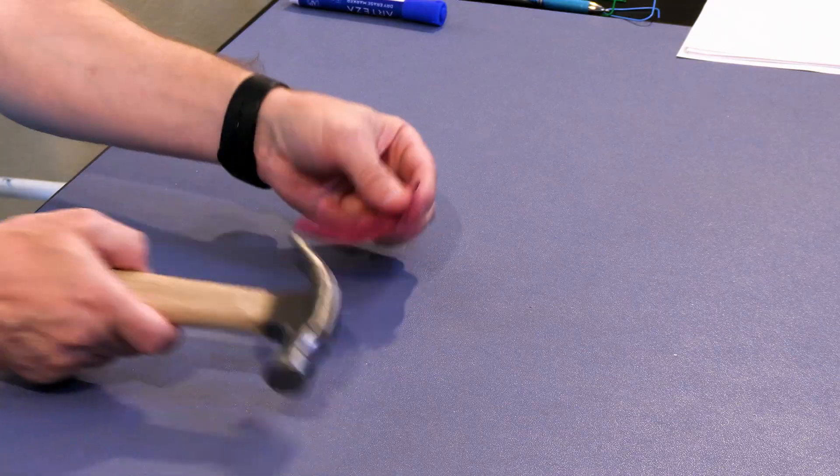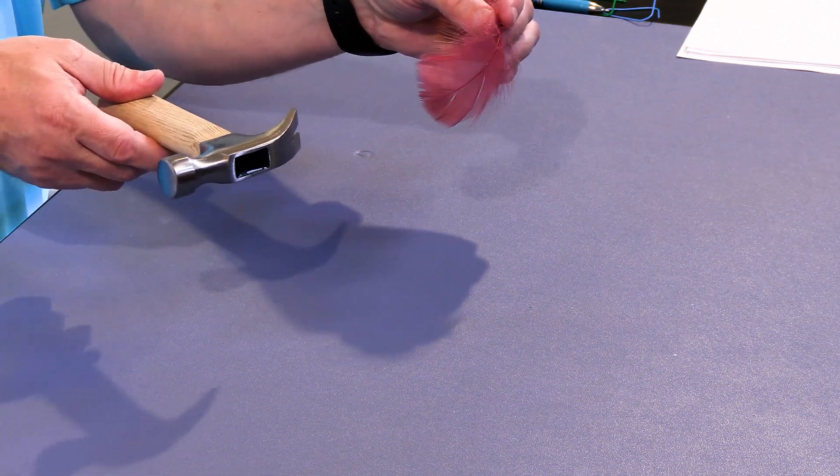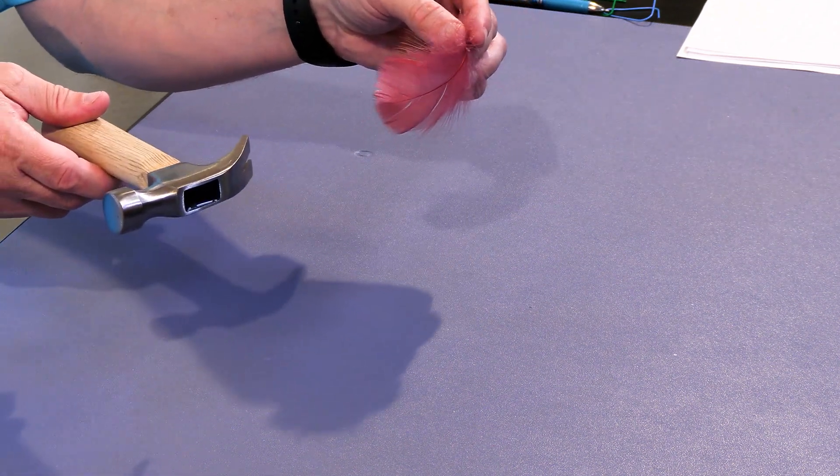So you may have heard that all objects on Earth fall or accelerate downward at the same rate. Now you might say, well that's not true. If you take a feather, right here's a feather, and a hammer, and you drop them, they're obviously not going to fall at the same rate.